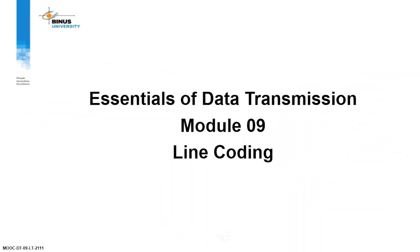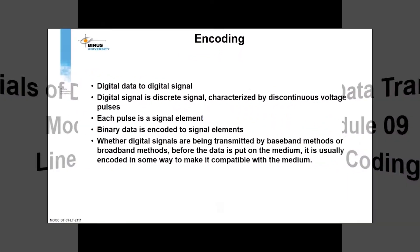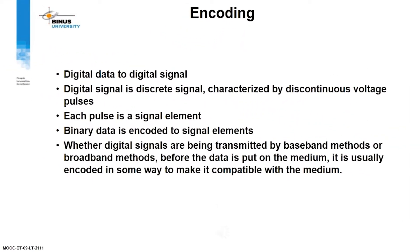Essentials of Data Transmission Model 9: Line Coding. Encoding is the conversion of digital data to a digital signal. A digital signal is a discrete signal characterized by discontinuous voltage pulses. Each pulse is a signal element, and binary data is encoded into signal elements. Whether digital signals are being transmitted by baseband or broadband method, before the data is put on the medium, it is usually encoded in some way to make it compatible with the medium.